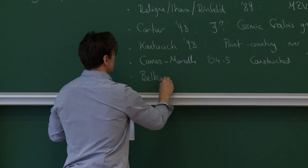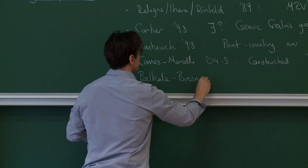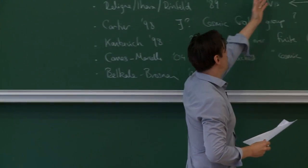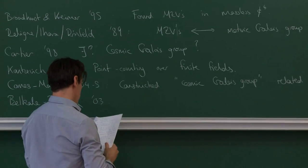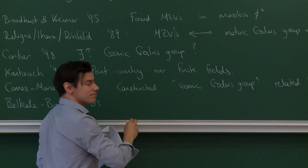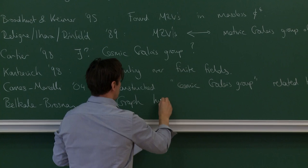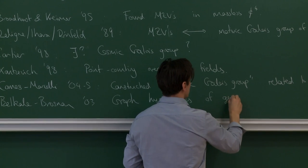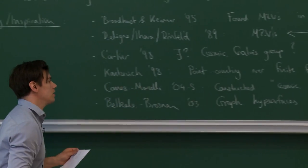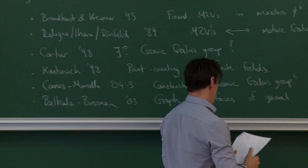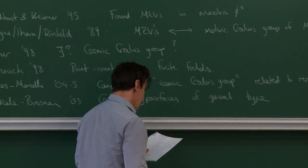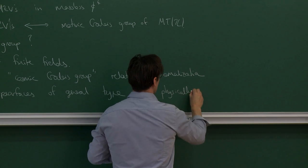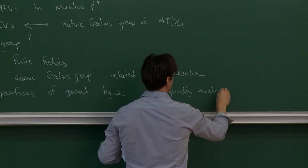Then an important contribution due to Belkale and Brosnan in 2003, which started to cast some doubt on whether amplitudes in this theory were in fact multiple zeta values at all. They found that graph hypersurfaces are of general type. In other words, when you look at the count of points over finite fields of hypersurfaces defined from Feynman graphs, you get pretty much anything possible. But their counterexamples were physically completely unrealistic — they corresponded to graphs which would never occur in any quantum field theory.